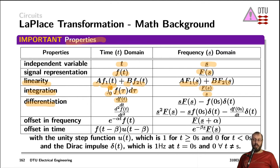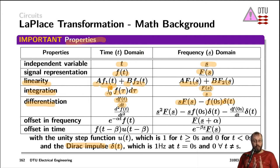Differentiation in the time domain leads to multiplication by the complex frequency s in the frequency domain. However, we also need to take the initial value of the function into account — the value of the function in the time domain at time 0 seconds — and this initial value gets multiplied with the Dirac function. A Dirac impulse, often abbreviated as delta(t), is a very narrow pulse with zero width and infinite height, where the area under the impulse is exactly 1.